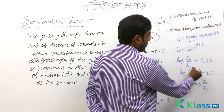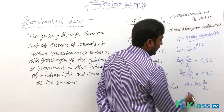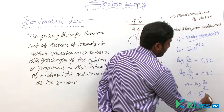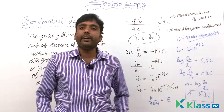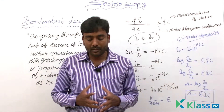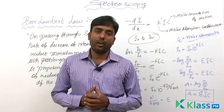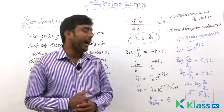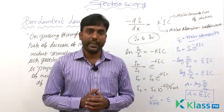Taking A = log(I0 / IT) and substituting: A = εlC. Here A indicates the absorbance, also called optical density. Since it is a ratio of I0 to IT, it does not have any units.